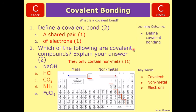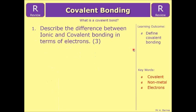Hopefully that's made covalent bonding a bit clearer for you. Have a look at the review question and see if you can do it: describe the difference between ionic and covalent bonding in terms of electrons. Have a go at that, and that ends this video.